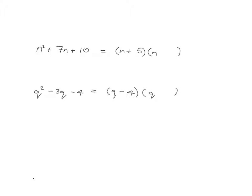Try it for yourself now and then we'll go over it. So in this case, this thing here would need to be plus 2 because where did this 10 come from? It comes from multiplying the last together, so you'd have to have 5 multiplied by 2. And then we just have to check that this middle term works out - 5n plus 2n does give me 7n. And in the next one, this would need to be positive 1 because negative 4 times 1, the last, needed to multiply together to give you negative 4. And then you just check: do they actually give you the right middle term? Yes, because when you FOIL this, you'll get q squared, plus q minus 4q, which does give you the minus 3q.